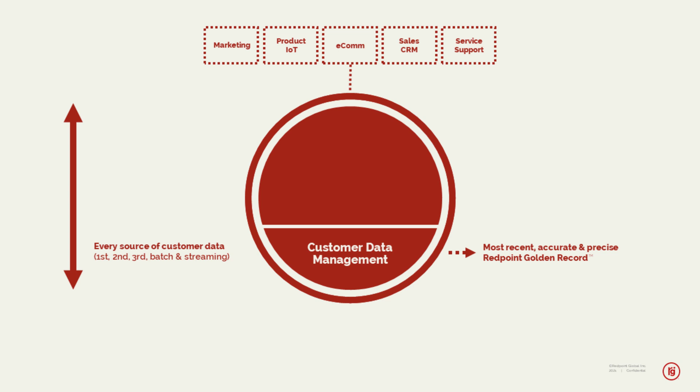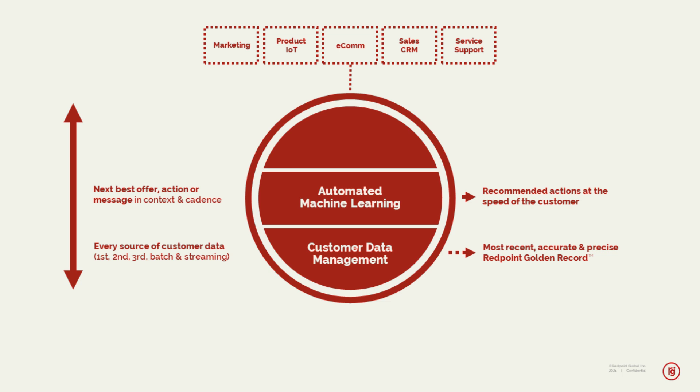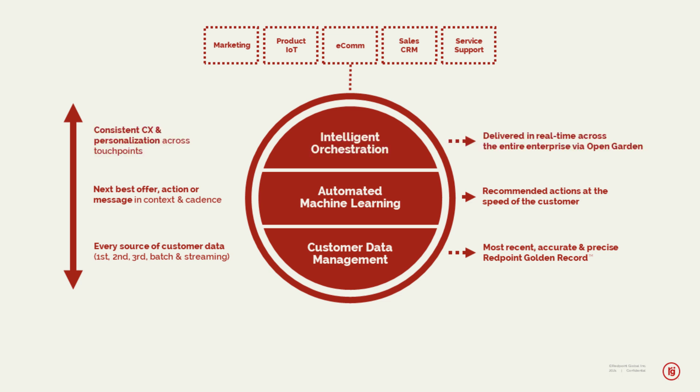It begins foundationally with customer data management: taking every bit of data you have, whether batch or streaming, and integrating it into a consistent and precise view of each consumer — the golden record. From that, using automated machine learning to offer the next best message, offer, or product in the context and cadence of the customer at the speed that matches the real-time journeys customers now demand. And ultimately, orchestrating these interactions across the entire stack and all engagement channels in real-time — important for things like buy-online, pick-up in-store.